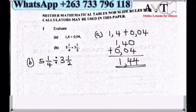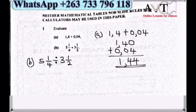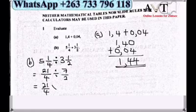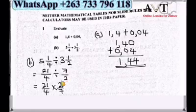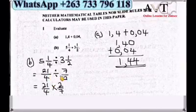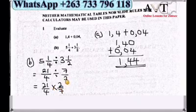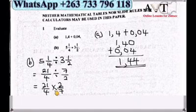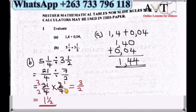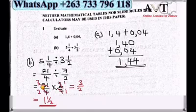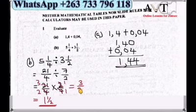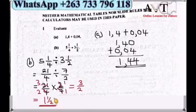Question 1b: 5 and a quarter divided by 3 and a half. We convert to improper fractions: 21 over 4 divided by 7 over 2. We multiply by the inverse, so 21 over 4 times 2 over 7. Cross-dividing: 2 into 2 is 1, 2 into 4 is 2, 7 into 7 is 1. This gives 3 over 2, which is 1 and a half as a mixed fraction.